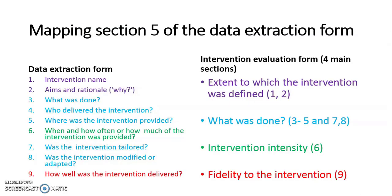We started off by mapping Section 5 of our data extraction form, which required the team to extract data on 9 key aspects of intervention quality: intervention name; aims and rationale; what was done; who delivered the intervention; where the intervention was provided; when and how often or how much of the intervention was provided; whether the intervention was tailored; whether the intervention was modified or adapted; and how well the intervention was delivered.